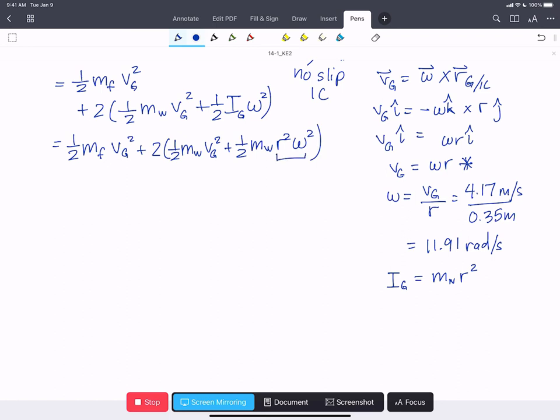R squared omega squared is going to be VG squared, based on this equation right there. So we'll write that out again, 1 half mass of the frame, VG squared, plus 2 times,